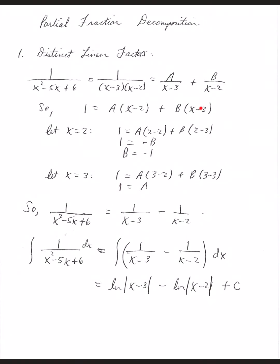Now, to get the other factor to go to 0, we can let x be 3. If we let x be 3, we get 1 equals A times 3 minus 2 plus B times 3 minus 3. The B term goes away and we're left with 1 times A equals 1. So A equals 1. That tells us the original rational function 1 over x squared minus 5x plus 6 can be decomposed into 1 over x minus 3, because A is 1, minus 1 over x minus 2, because B was negative 1.